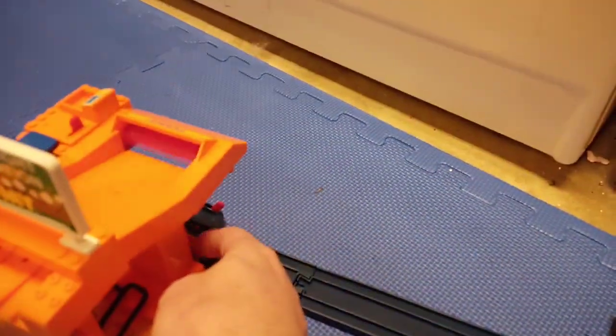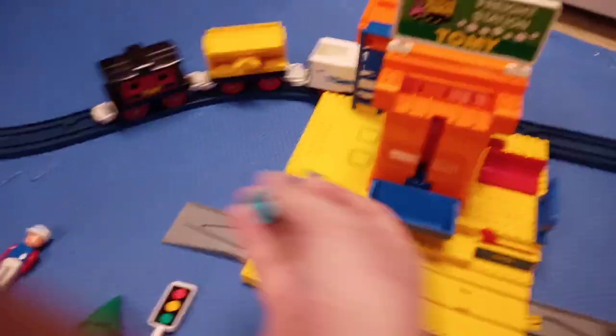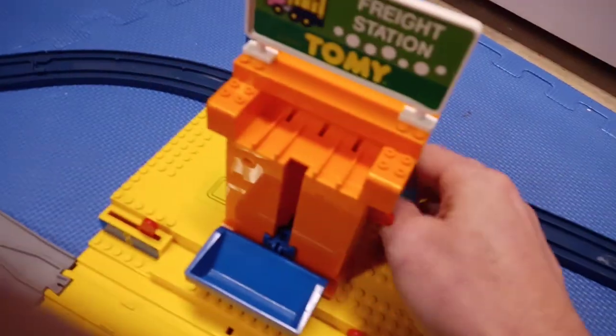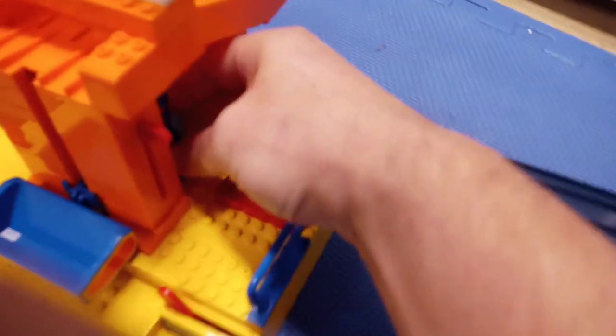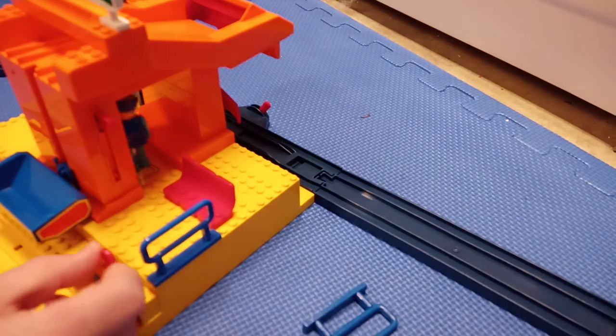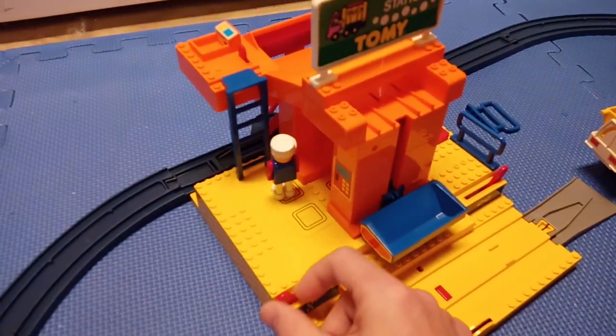And then this goes right here. These are little magnets on the bottom, and so you put them on these little pads here. And you can move that back and forth. And then there's another pad right here. You can move them back and forth like that.